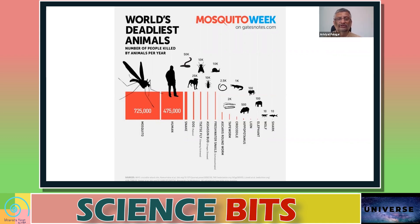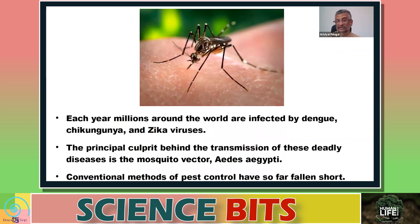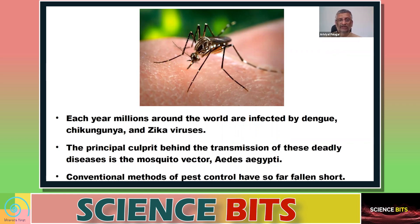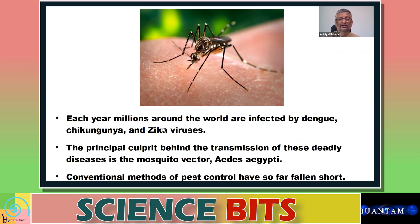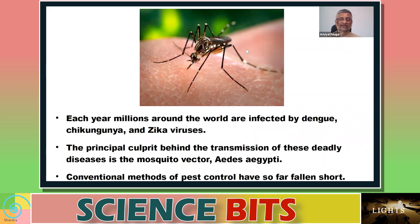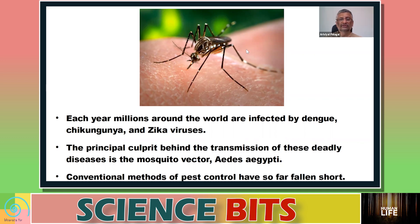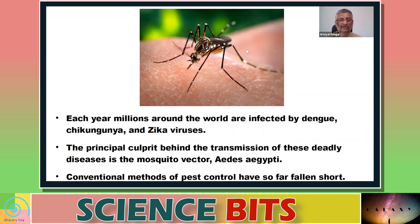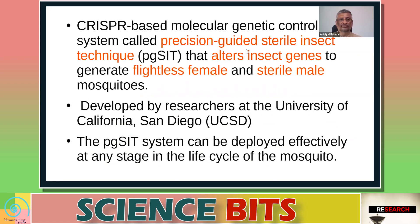Mosquitoes carry various pathogens like dengue, chikungunya, and Zika, and millions of people are affected. One of the mosquito species behind this is the Aedes mosquito. Conventional methods of pest control have not fully yielded the desired results — while practices like keeping surroundings clean and avoiding stagnant water help, they have not completely solved the problem.